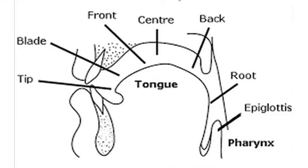Today I am going to discuss the tongue. The tongue is the most important organ of speech. In many languages, the word tongue means language. It is the most flexible organ of speech and it can assume a large number of shapes.